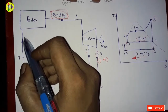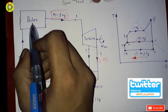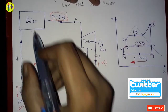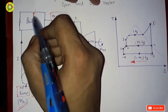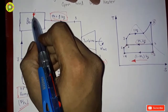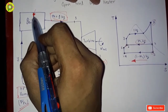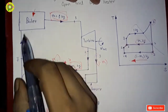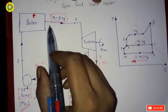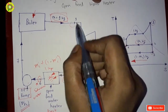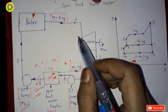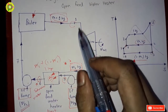This saturated liquid at boiler pressure enters the boiler, where it is heated. Its temperature increases and it is converted into superheated steam, which then comes out at State 1. The whole process is then repeated in this regenerative Rankine cycle with open feed water heater.